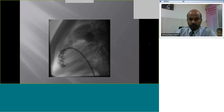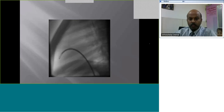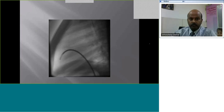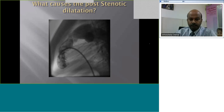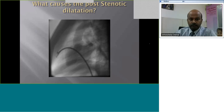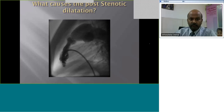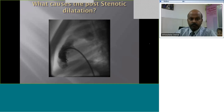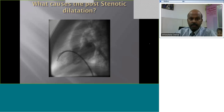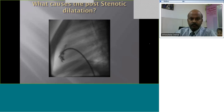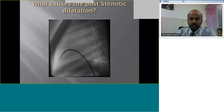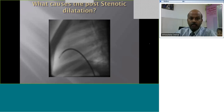Look at this lateral right ventriculogram. The pulmonary valve is doming and mildly thickened. You see a prominent post-stenotic dilatation. You see the aorta filling in levo-phase, suggesting that the interventricular septum is intact — no VSD is associated. What causes the post-stenotic dilatation? What is the reason for the post-stenotic segment to dilate?